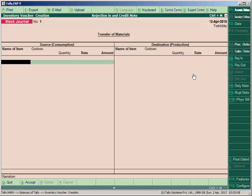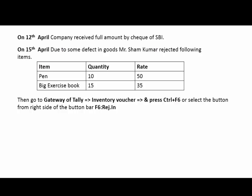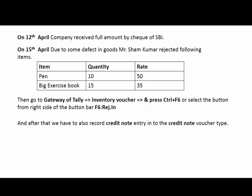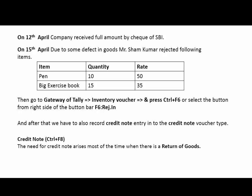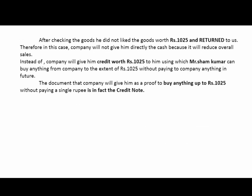Go to accounting or inventory vouchers. After doing the Ctrl+F6 rejection in entry, we also need to record a credit note entry in the credit note voucher type. For credit note voucher type, press Ctrl+F8. The need for a credit note arises most of the time when there is a return of goods.